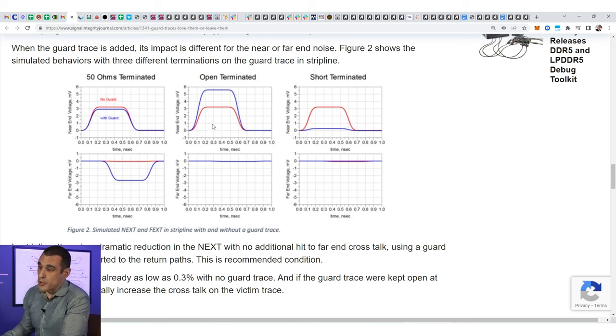Same thing happens in the far end crosstalk with the open terminated trace but here with the open terminated trace where the trace is left floating we also have an increase in the crosstalk and that's in the near end crosstalk. So again red curve is with no guard trace, blue curve is with the guard trace applied, we get an increase in the crosstalk. Now when we have the 50 ohms terminated guard trace which as I said is not really a practical situation, I don't know anyone that's going to terminate a guard trace to 50 ohms or copper pour to 50 ohms.